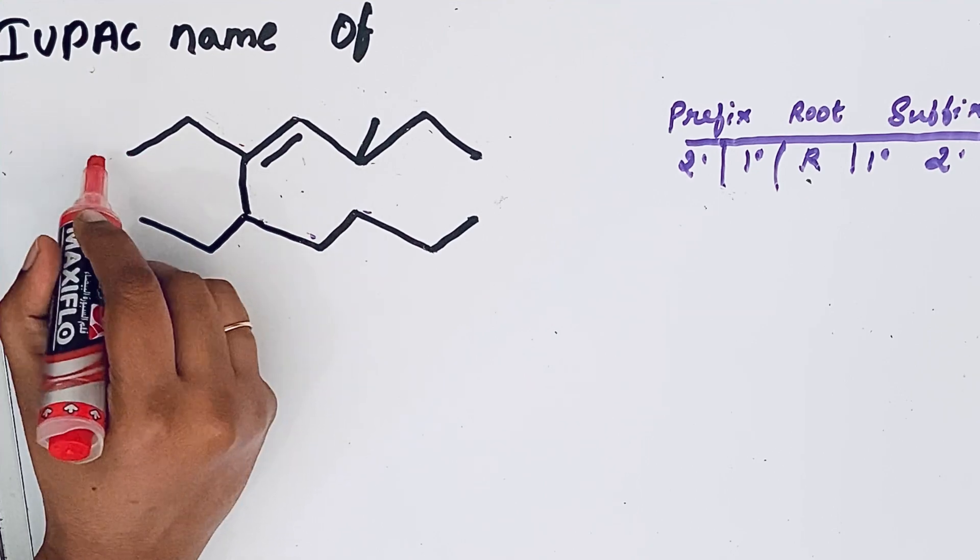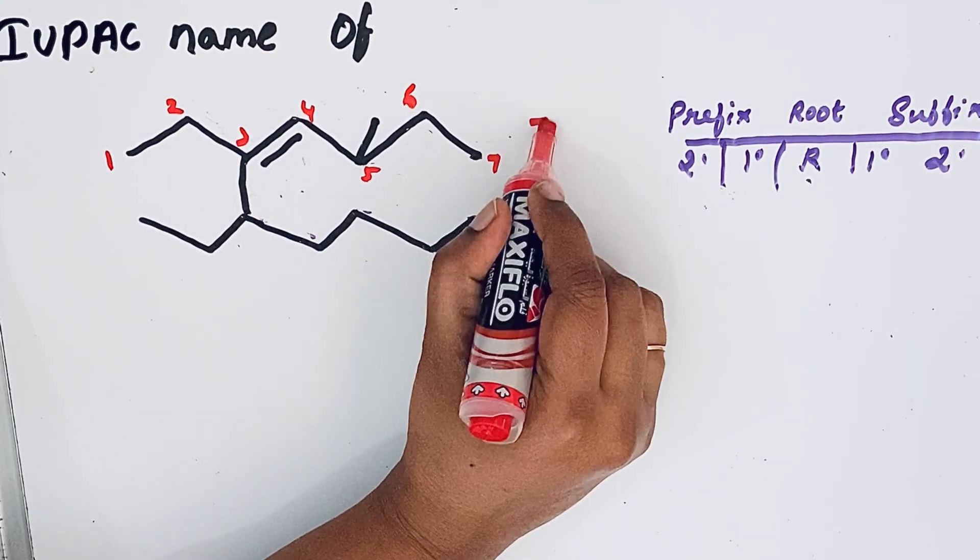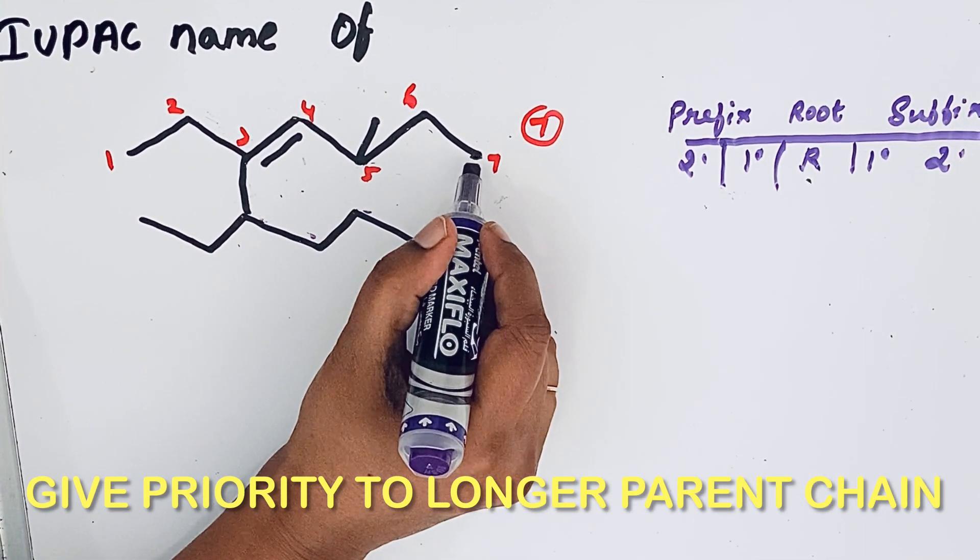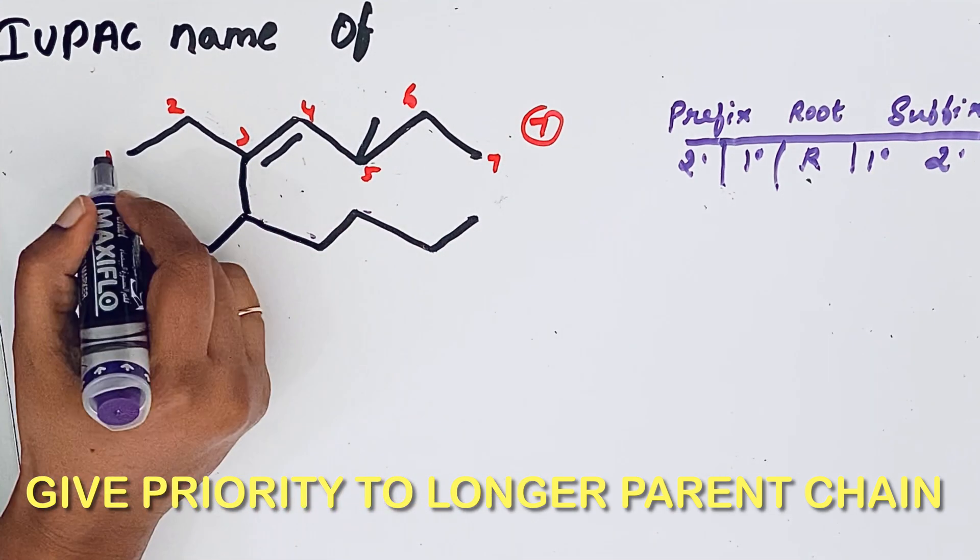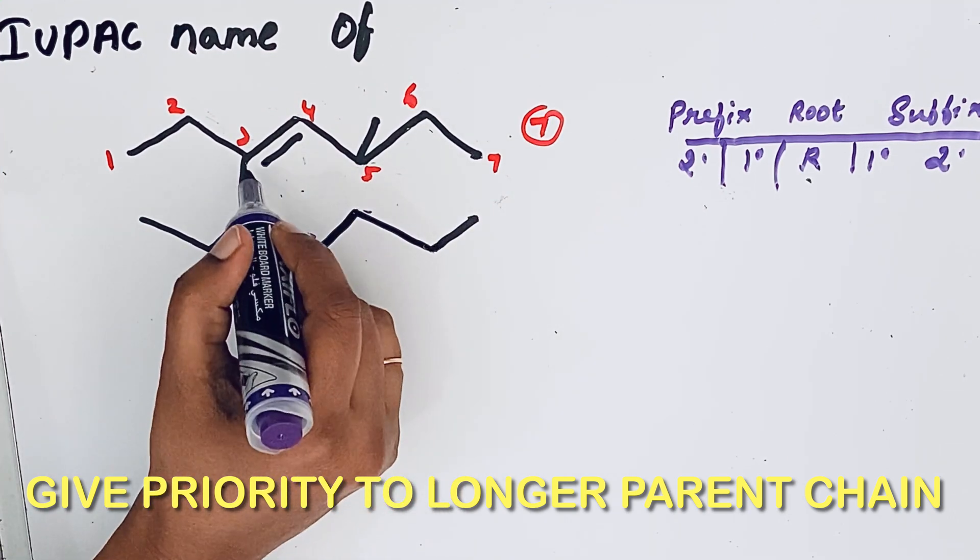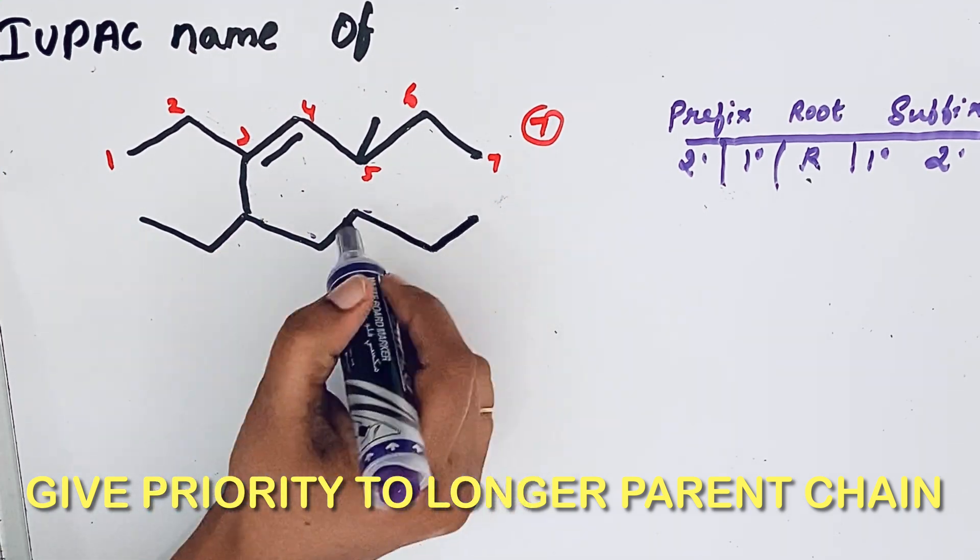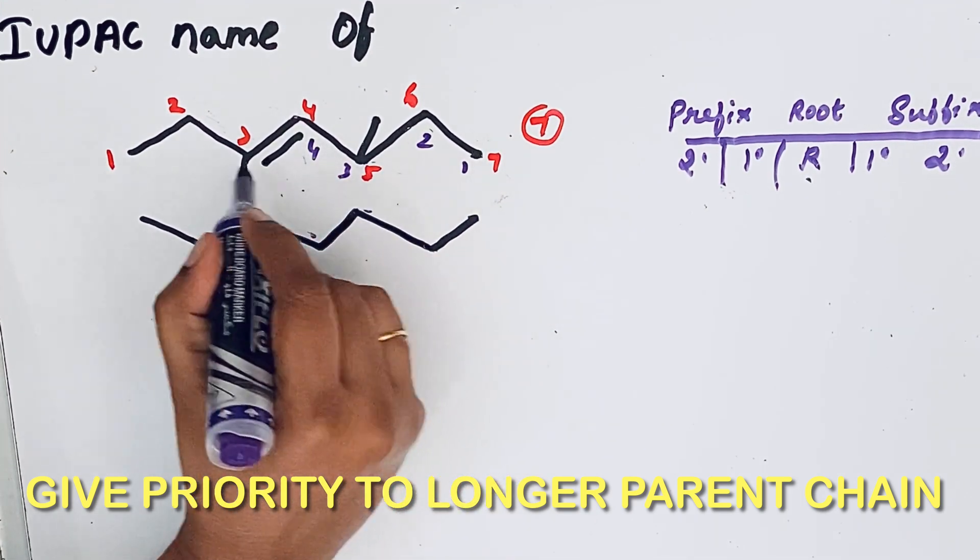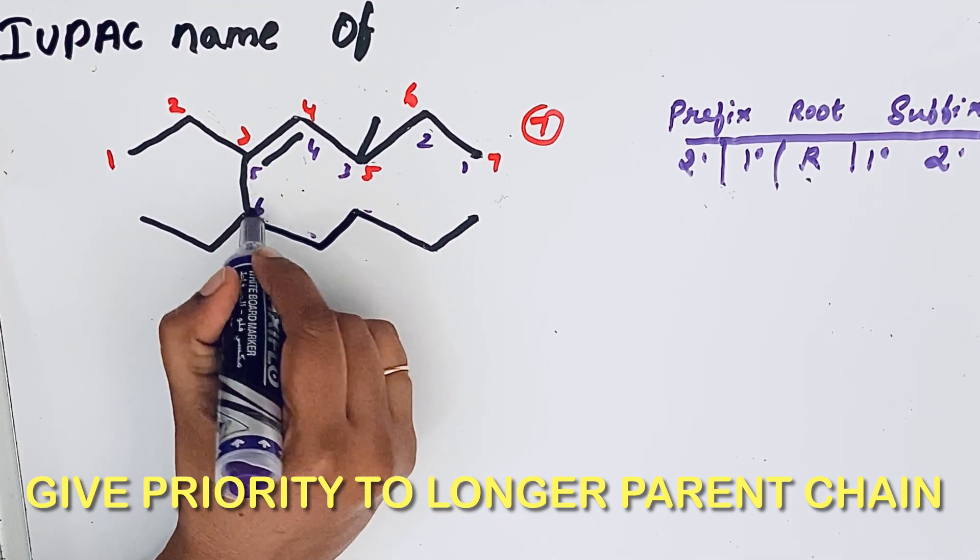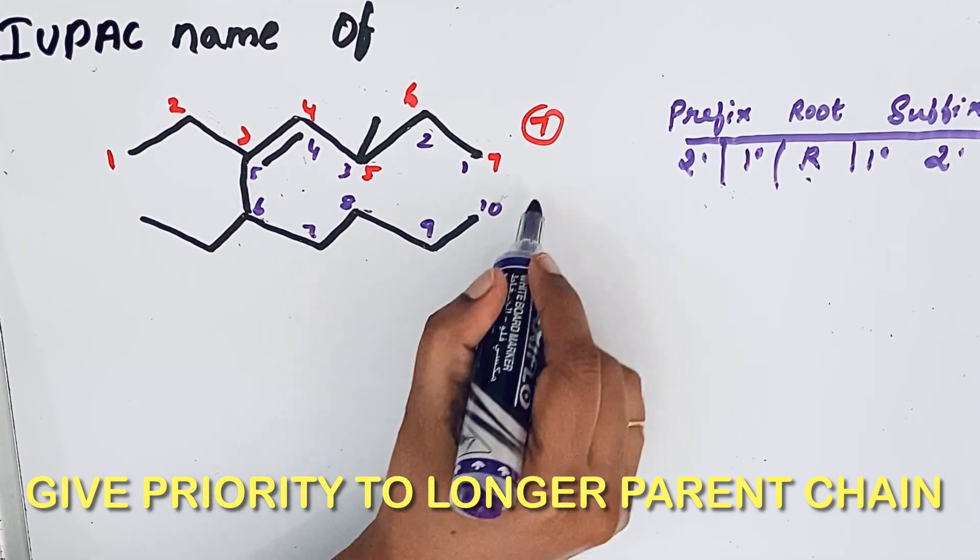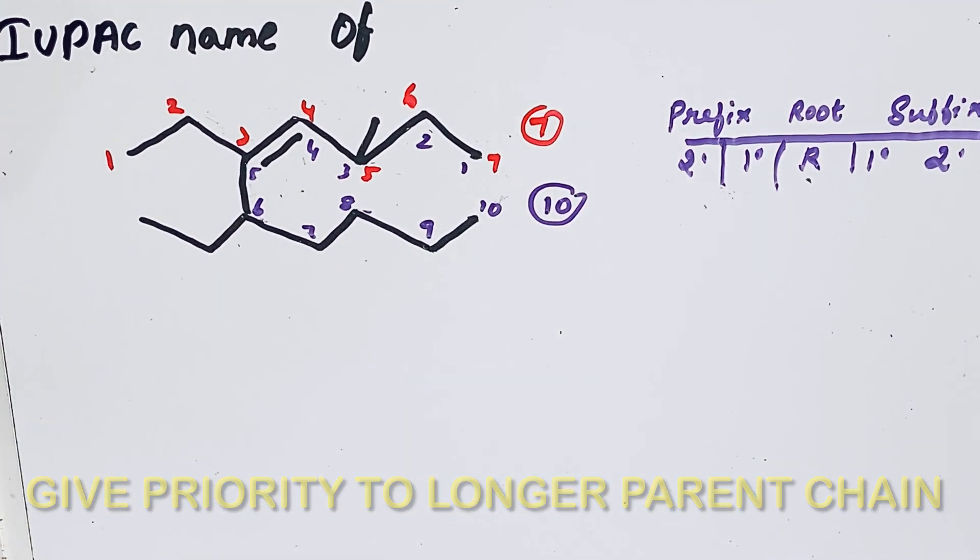If you start from left to right, it will end up with a seven member parent chain. Now we can start from right to left, but if you go from right to left again we will get that seven member parent chain only. So instead of going straight we will change our direction: one, two, three, four, five, now we come down six, seven, eight, nine, ten. So this results in a ten member parent chain.